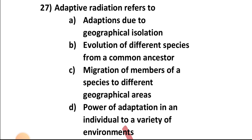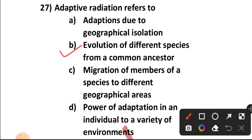Question number twenty-seven: Adaptive radiation refers to — adaptations due to geographical isolation, evolution of different species from a common ancestor, migration of members of a species to different geographical areas, or the power of adaptation in an individual to a variety of environments? Adaptive radiation refers to the evolution of different species from a common ancestor. Option B is the correct answer.